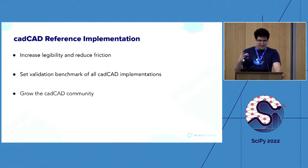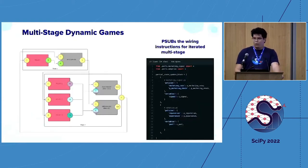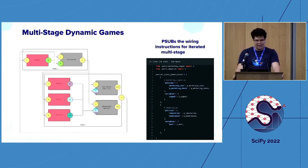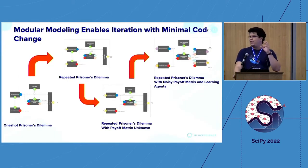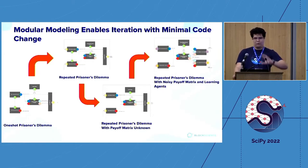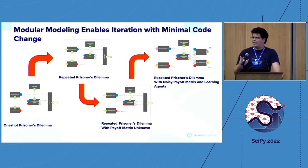Our goals for the rewrite are increased legibility, reduced friction for the user, and setting a validation benchmark for all CAD-CAD implementations. One of the main goals is modularity — each block you see in the picture is a state that can be composed like Lego pieces. Not only can the blocks be composed, but also sets of blocks, giving you a very modular system simulation.